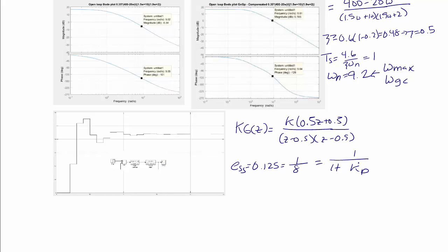This means that kp must equal 7, where kp is equal to k G(1). We're going to have k times 0.5 plus 0.5 over 1 minus 0.5 times 1 minus 0.9. When we solve for k, we get that k must equal 0.35.